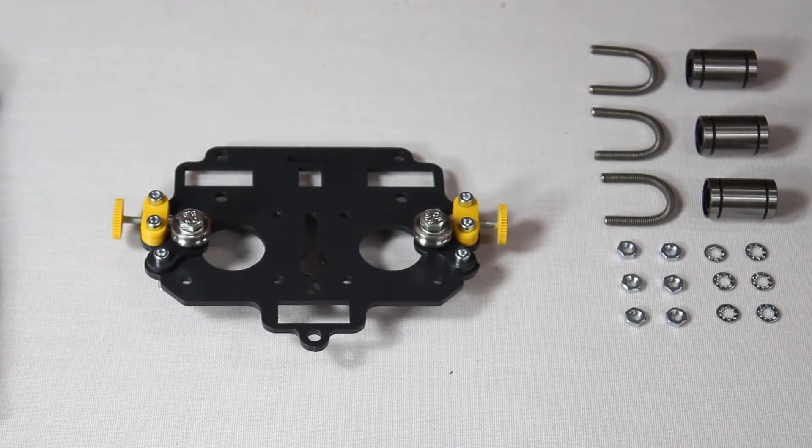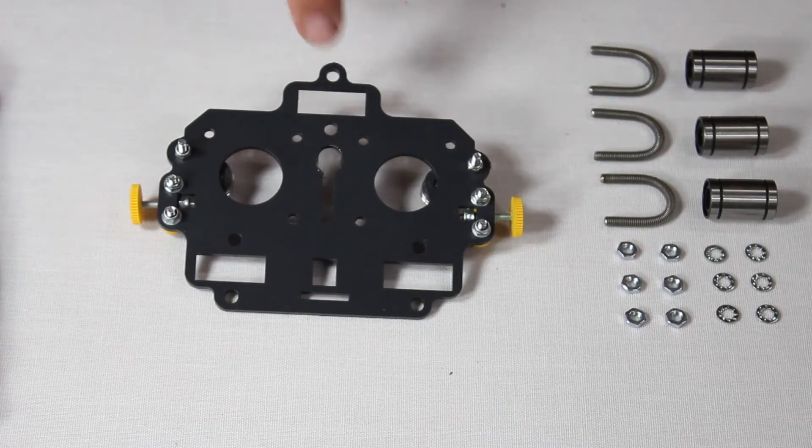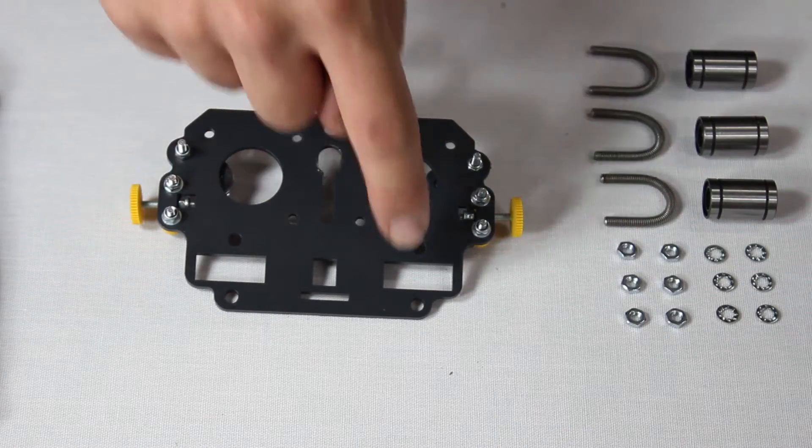The following step is to clamp in some linear bearings. This is identical to when we clamped in the linear bearings to the table structure before. You just have to be sure the orientation is always correct.